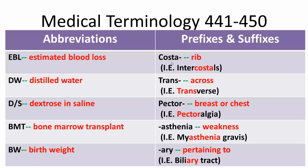And now for the prefixes and suffixes. Costa means rib, so intercostals refers to the muscles running between the ribs. Trans means across, so transverse. Pector means breast or chest, so pectoralgia is chest pain.